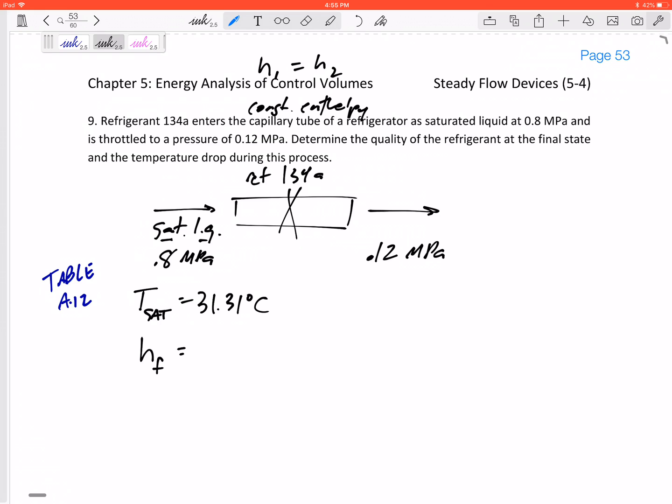So let's find the h. Well, it's a saturated liquid, so the h_f at 0.8 MPa—go ahead and flip through your property tables, make sure you can do this and find these values. This is what I've got: 95.48 kilojoules per kilogram. And so that tells me that this outlet is also—